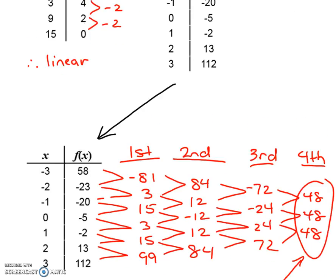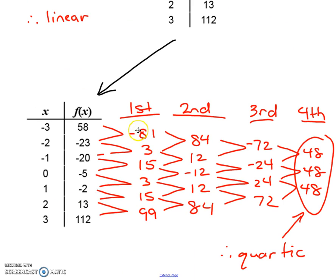The second one is not linear because none of the first differences are the same, and it's not quadratic or x to the power of 2 because none of the second differences are the same. It's not cubic because none of the third differences are the same.